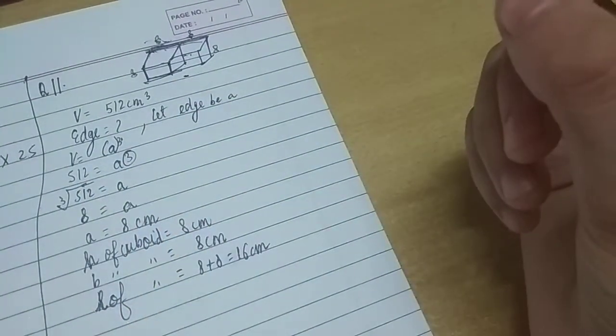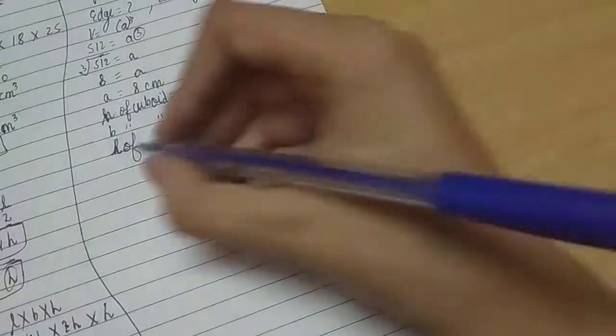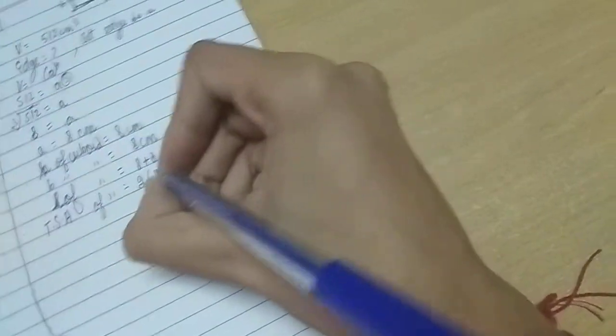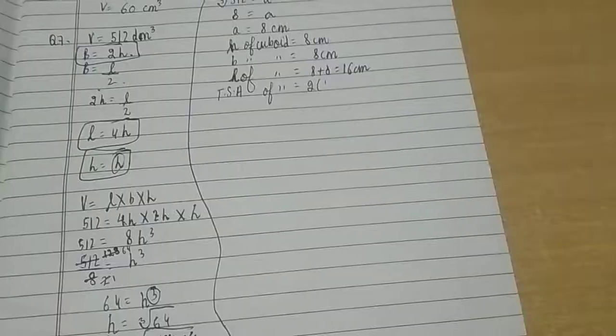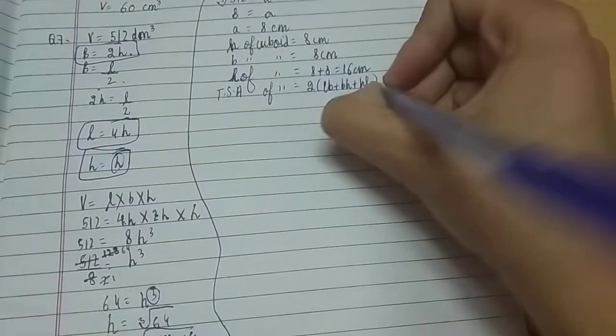Now we are told in the question, find the surface area of the resulting cuboid. So total surface area of the resulting cuboid is equal to 2 × (length × breadth + breadth × height + height × length).